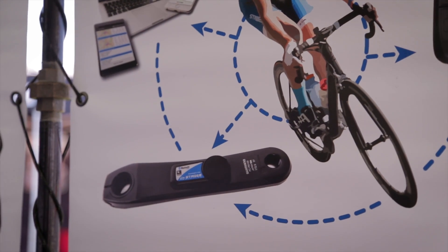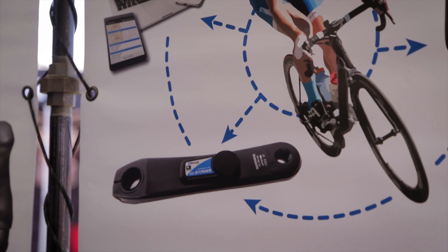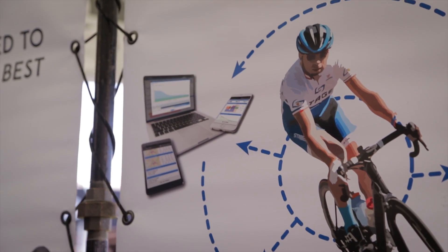From there, we're processing that data and then sending it to a cycling computer, a head unit of some sort, either a Stages dash or maybe a Garmin device.